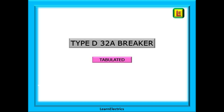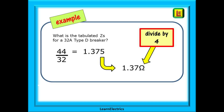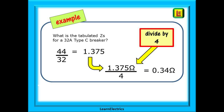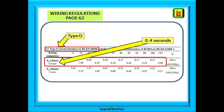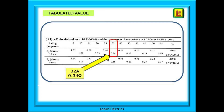Now look at type D breakers. We will stay with 32 amp devices and calculate the tabulated value for a type D. Do exactly the same as before — calculate it as if it was a type B breaker to begin with. So 44 divided by 32 is 1.375 ohms again, but now we divide by 4 for a type D breaker or RCBO. 1.375 divided by 4 gives us 0.34 ohms as a tabulated ZS. Scroll down page 62 and find the section for type D breakers. We want the row for a 0.4 disconnection time. Find 32 amps and our answer is as expected: 0.34 ohms.